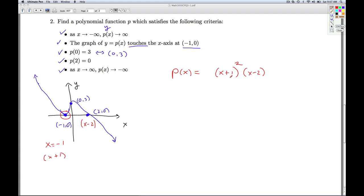Now I've got to fix up the end behavior and the y-intercept. So P of x is equal to some multiple of this. I'm just going to call that number a. I know that P of 0 is 3. So I'm going to plug 0 into my formula.